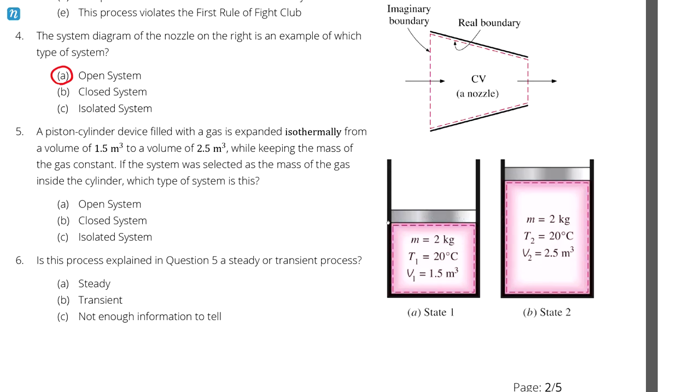So it's reasonable to represent the system as one where the mass doesn't cross the boundary. So we can immediately eliminate open system. And the difference between a closed system and isolated system is whether or not energy crosses the boundary. So to resolve this, we have to think about what's happening. And in this case, it told us that the gas is expanding isothermally. So the temperature is constant throughout the process.